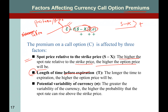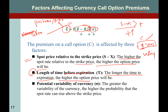Number two: length of time before expiration. The longer the time to expiration, the higher the option price will be. If the question asks which call premium will be higher — a one-year call option or a 30-day call option — you must select the one-year option, because the longer the time period, the higher the call option premium price.